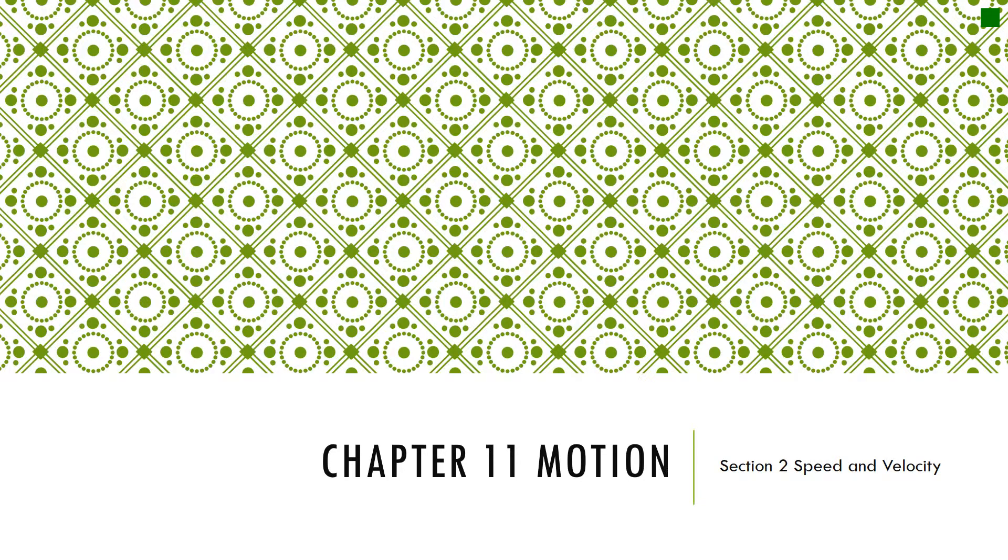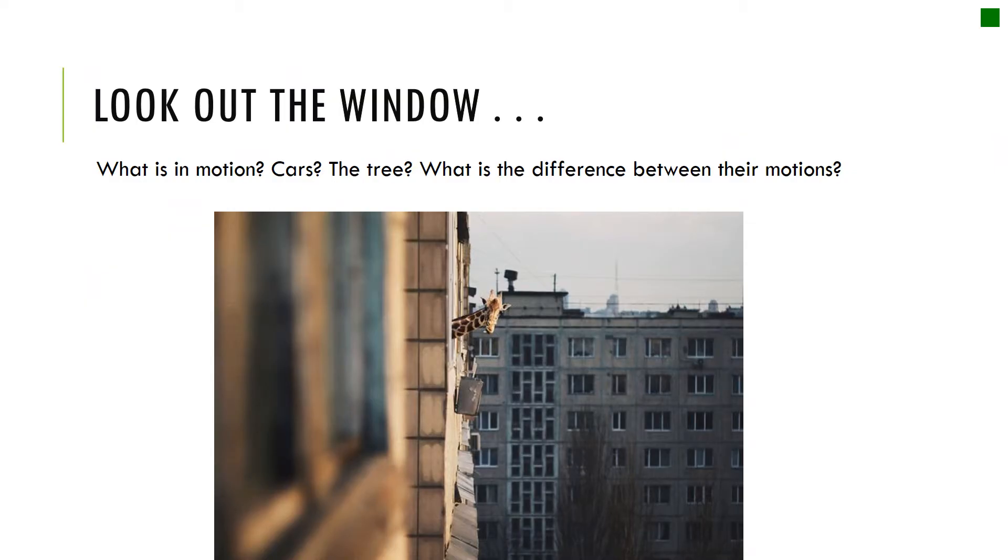Hey guys, this is chapter 11 section 2 and we're going to learn about speed and velocity. If you were to look out the window at a street, what would be in motion? Would the cars be in motion? Is the tree in motion? I hope not, that'd be weird. But how can you tell what's really moving?